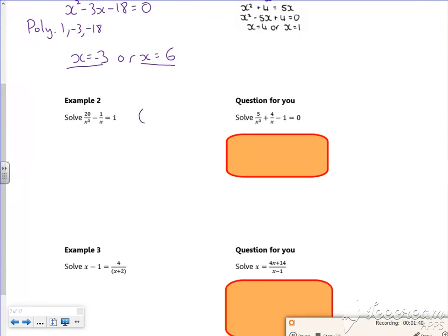So this one I'm going to multiply through by x squared. So I'm going to have a 20 minus x, because it was x squared over x, is equal to x squared. Try and keep the x squared positive. Sign's different, biggest ones are positive, it's got to be 5 and minus 4, hasn't it?